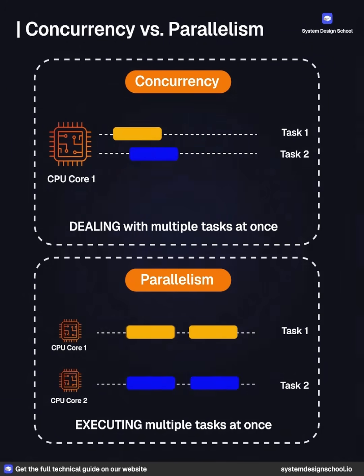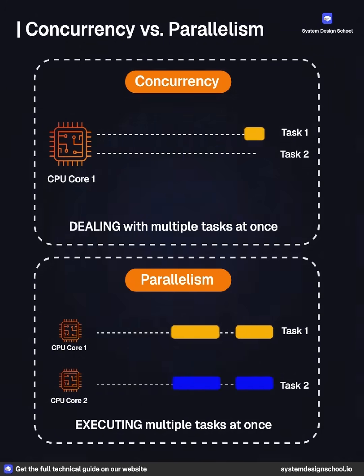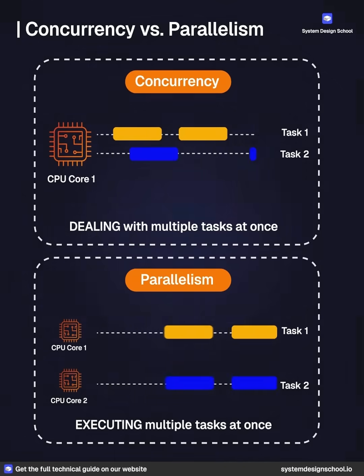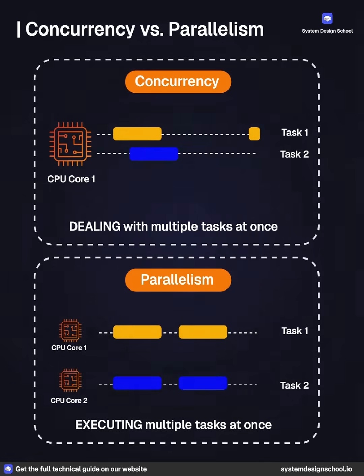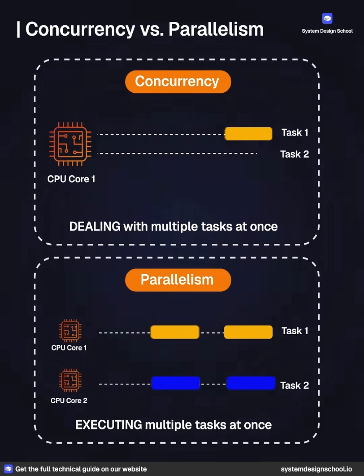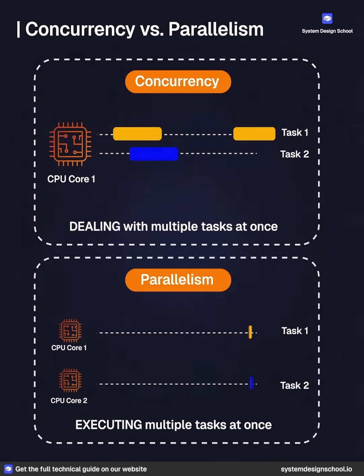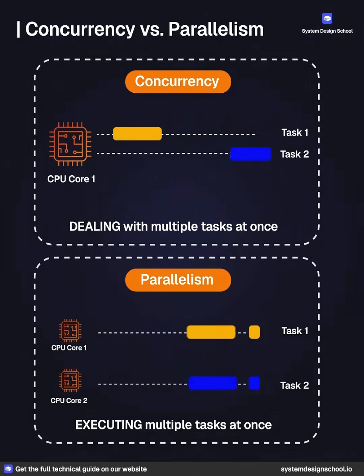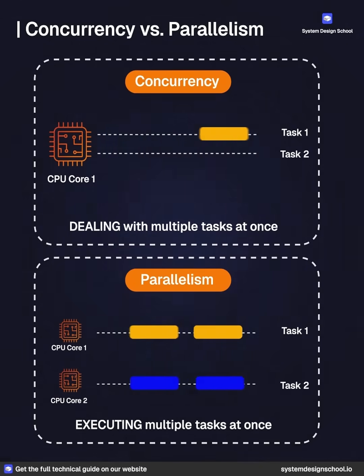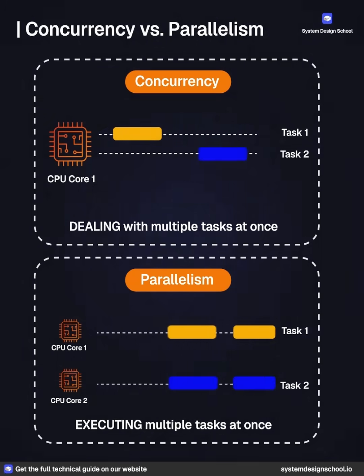Example: a web server handling many requests via threads. Parallelism — visual: two CPU cores execute task 1 and task 2 simultaneously. Definition: executing multiple tasks at once.